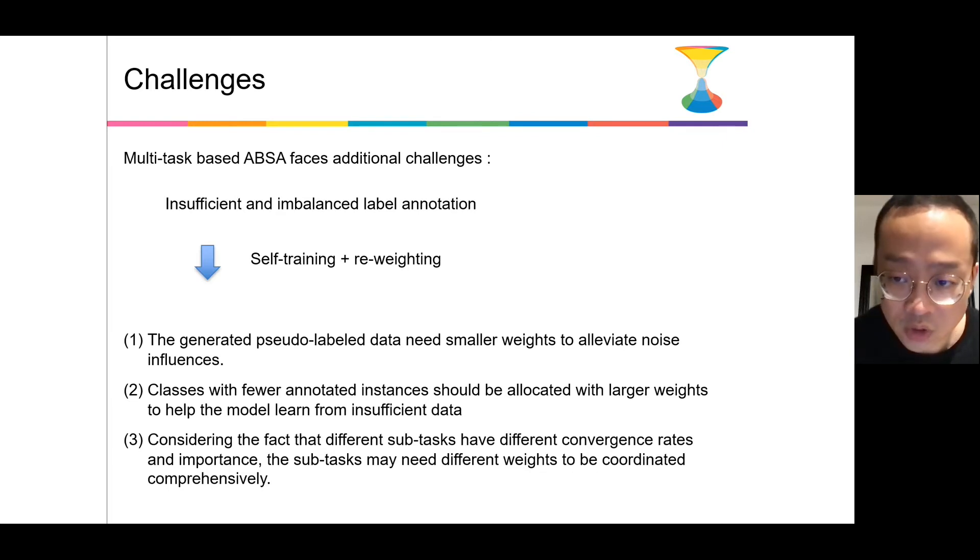This kind of formulation causes our training data to become more insufficient and imbalanced. This is because the target 'others' usually dominated the sequence tagging task. And if three sequence tagging tasks are organized into one multi-task model, it will make it worse. So our solution is self-training, which can generate pseudo-labeled data to alleviate the problem.